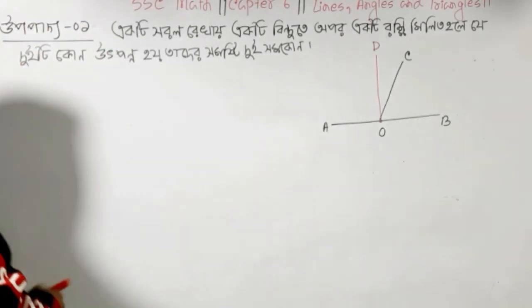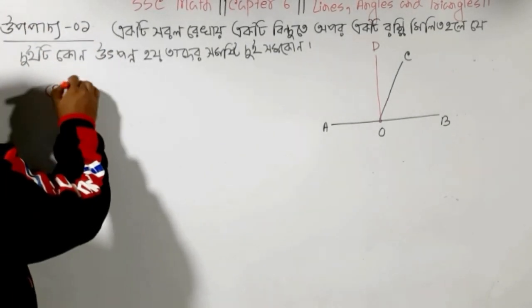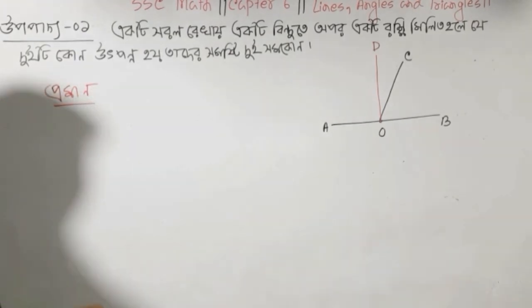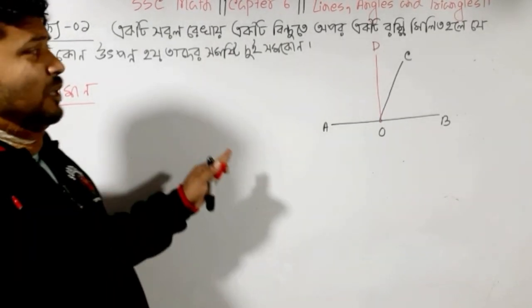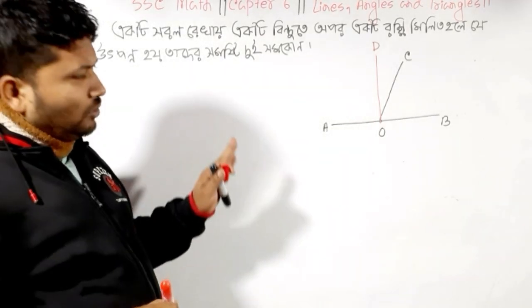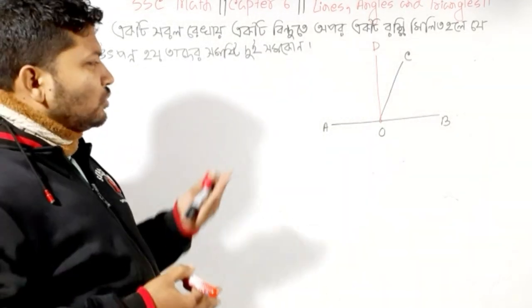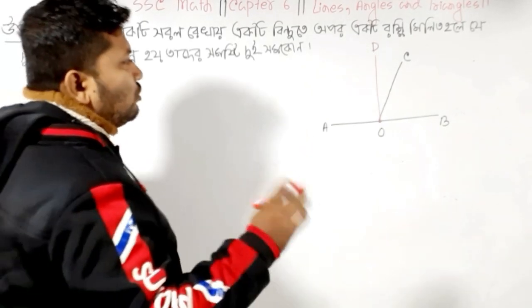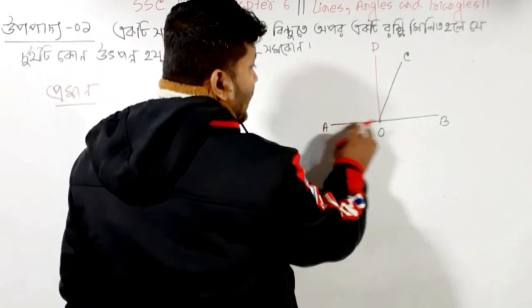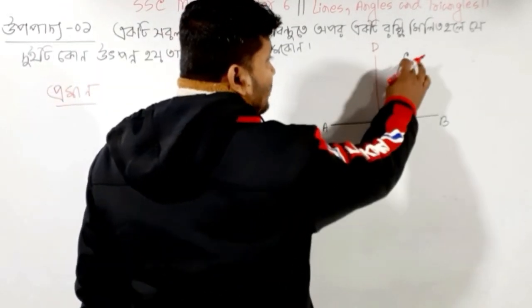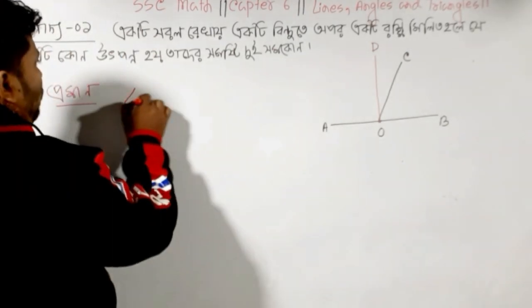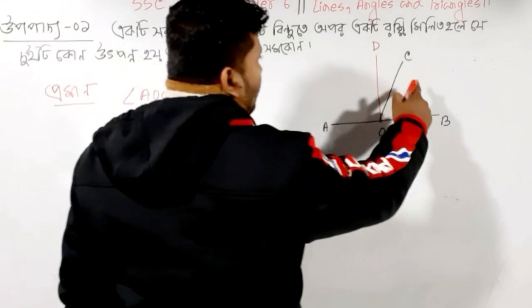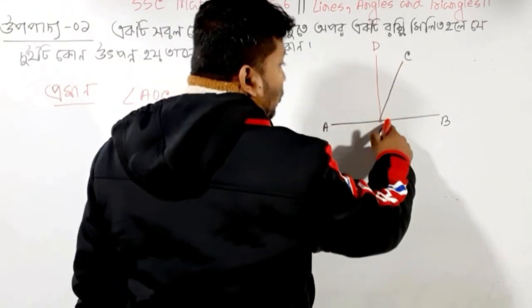Let's see. Prumand. Prumand. How do you write? A, B, O, D, and Lombo. If you look at it, you can see it. Okay. Let's see. Wait a second. Let's see. Also, C, O, P.